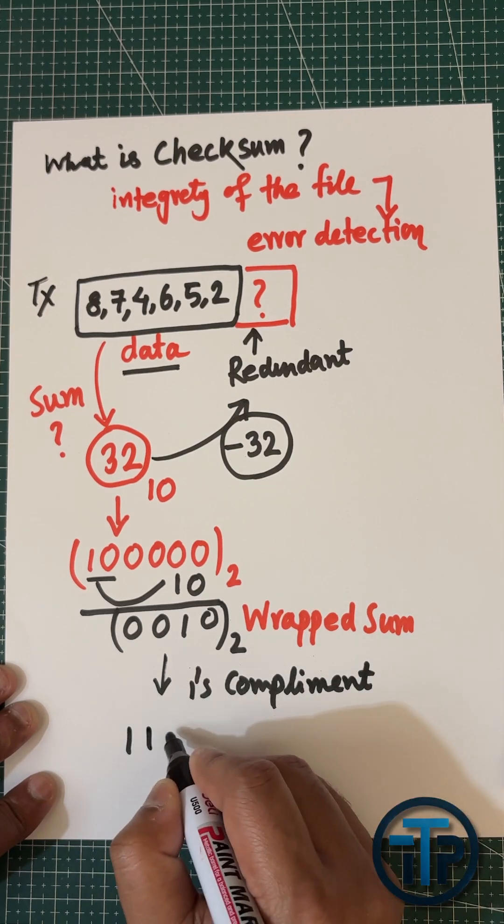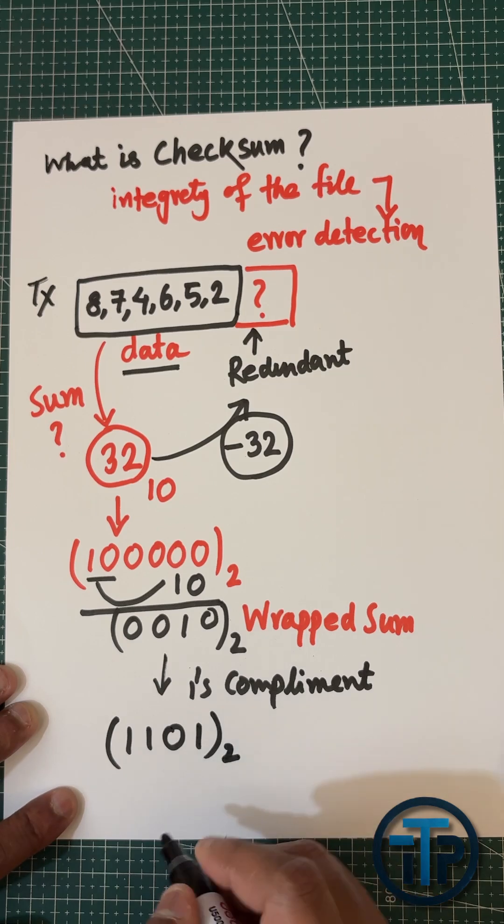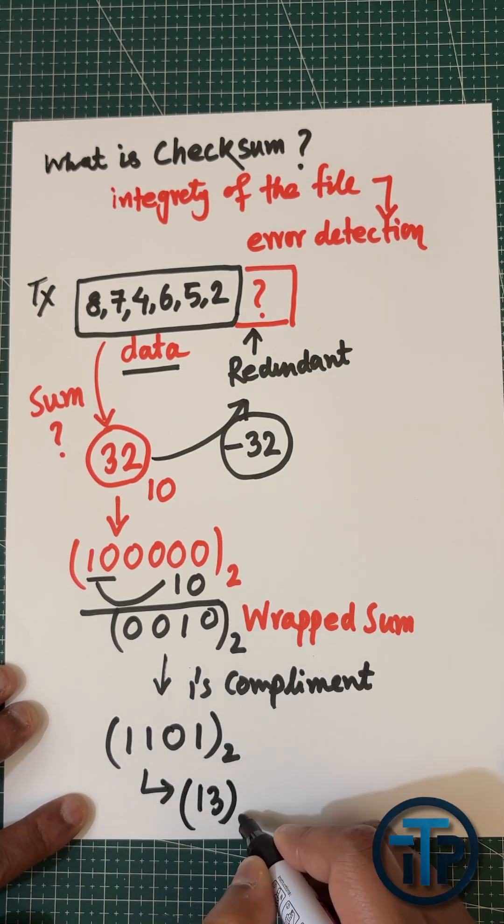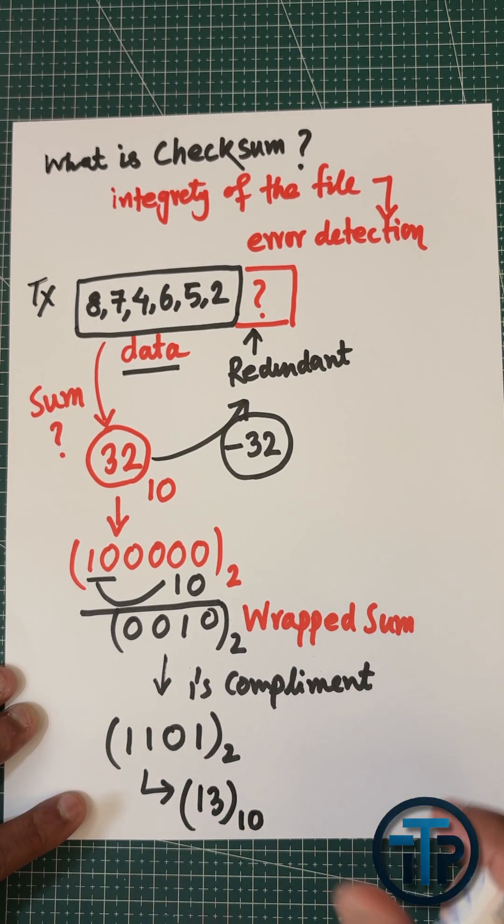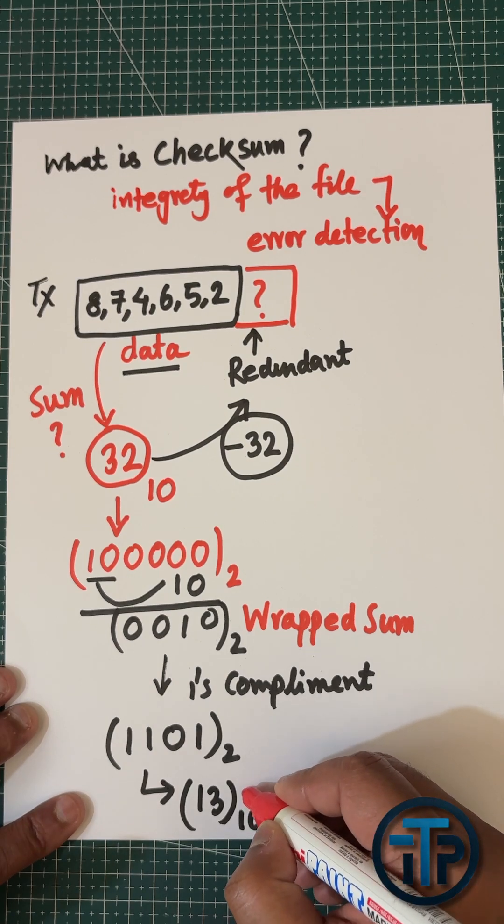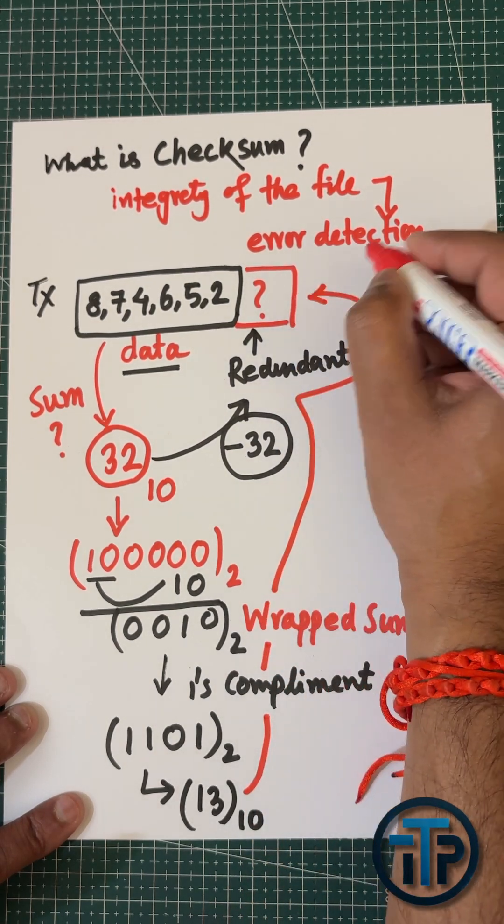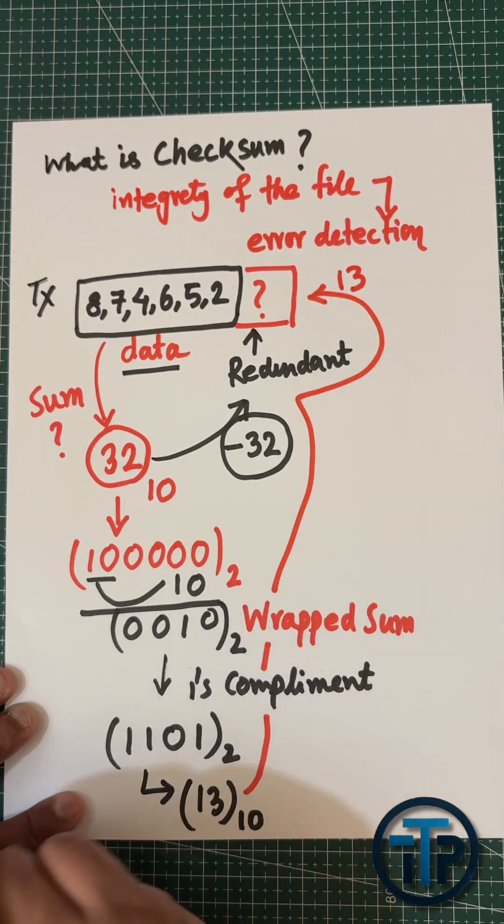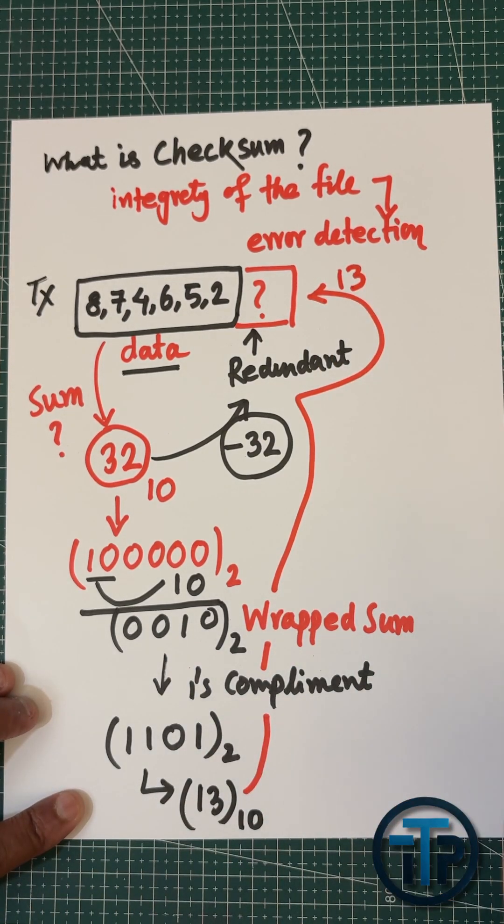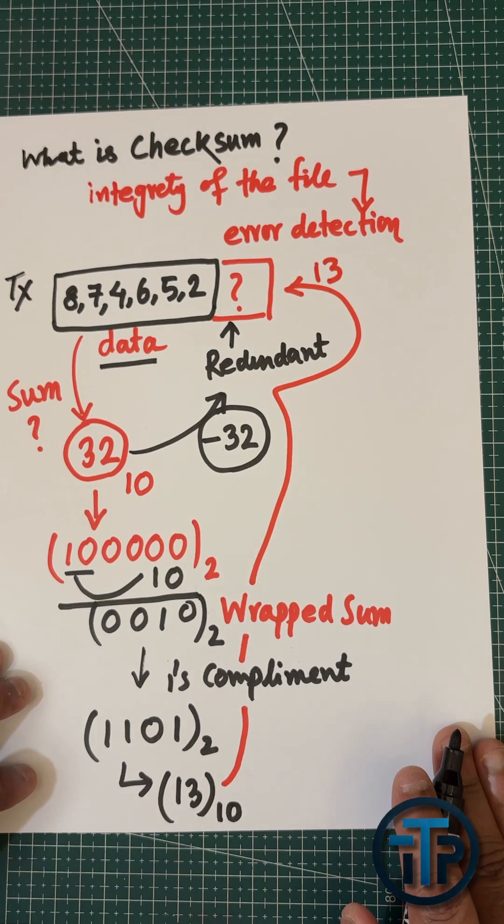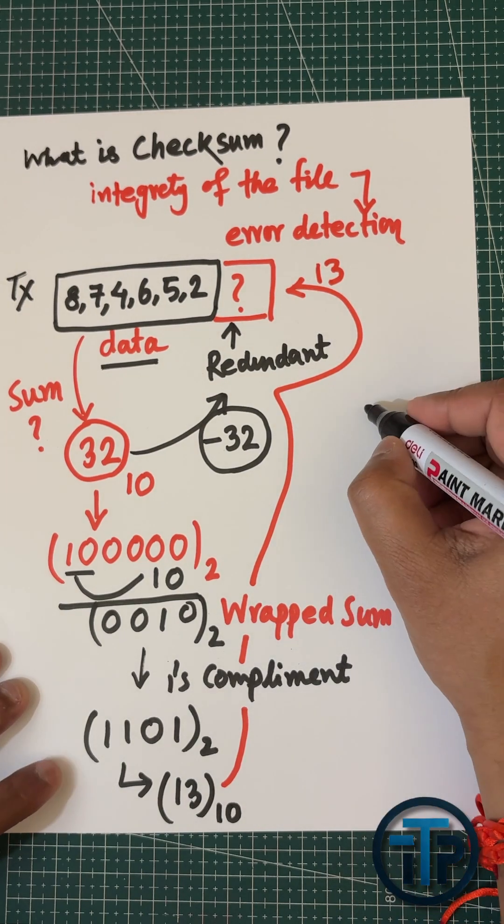Once complement will be 1101. That is your one's complement, because we have to send the negative of the sum. Basically, you have to send 13 in the decimal format. So your checksum will be 13 in the decimal format.